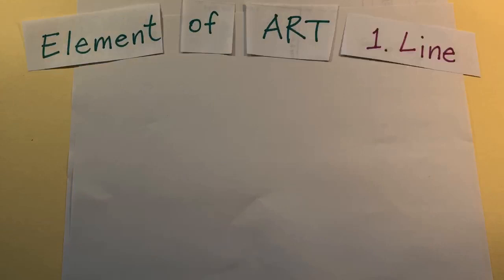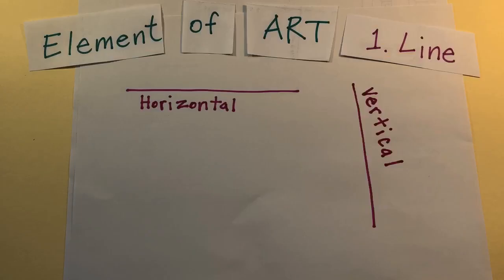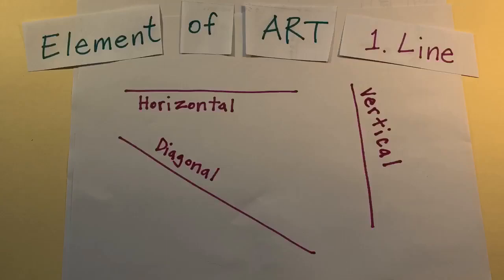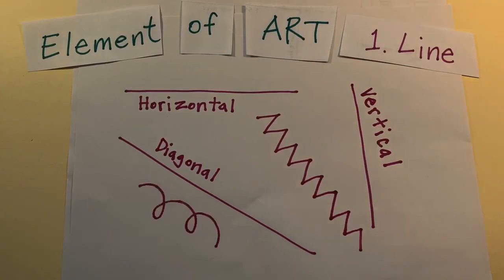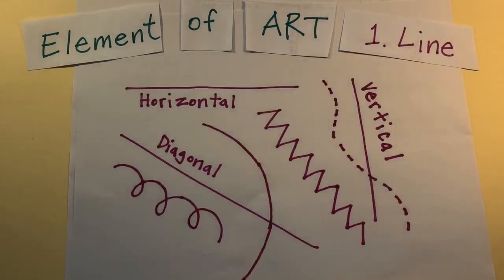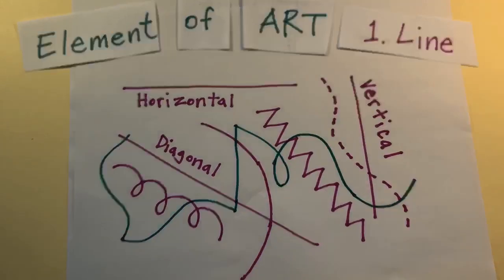The first element of art is line. Lines can be horizontal, vertical, diagonal, zigzag, curly, dotted, curved, so many different kinds of lines.